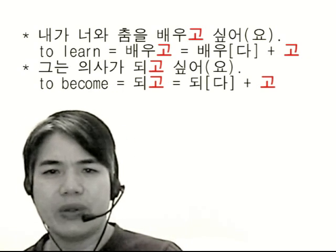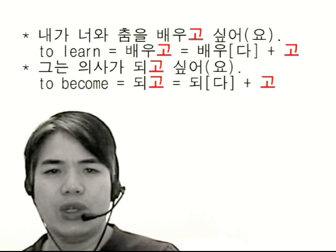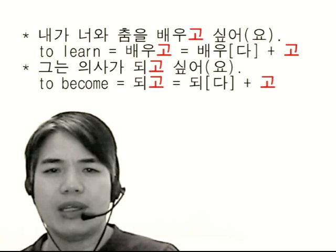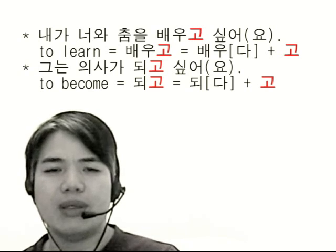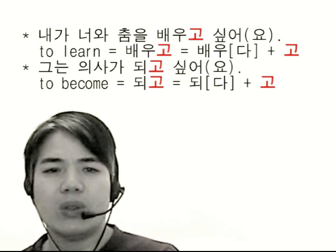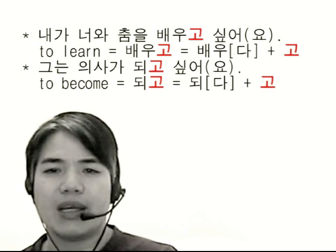Let's look at the marking particle 고, which links verbs. 내가 너와 춤을 배우고 싶어요. 배우고 means 'to learn.' The verb root is 배우다, drop 다, add 고 — 배우고. Second: 그는 의사가 되고 싶어요. 되고 means 'to become.' The verb root of 'become' is 되다, drop 다, add 고 — 되고. So 고 links two verbs: 되다 and 싶다, like 되고 싶어요 — it is like 'TO' in English, as in 'want to become.'